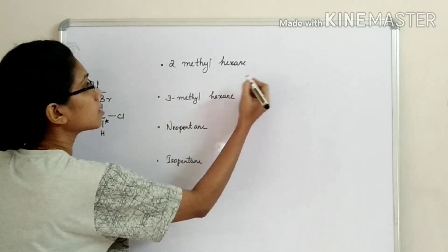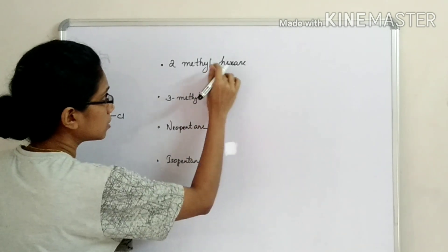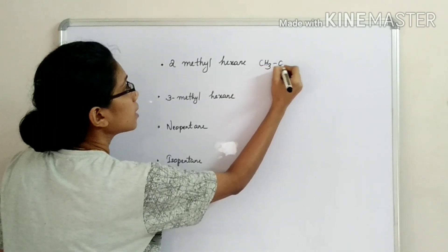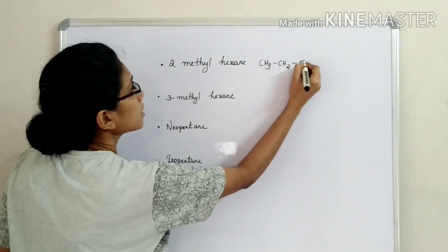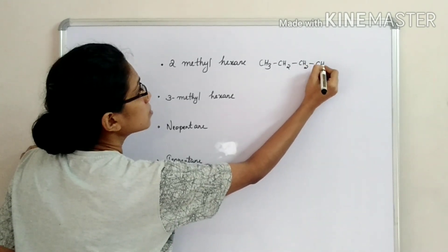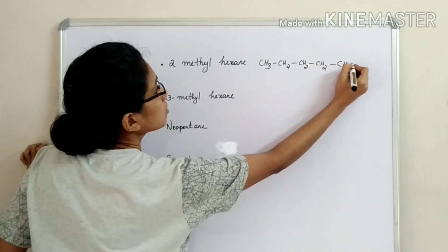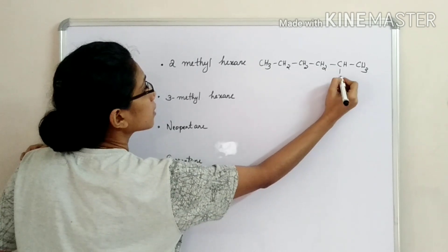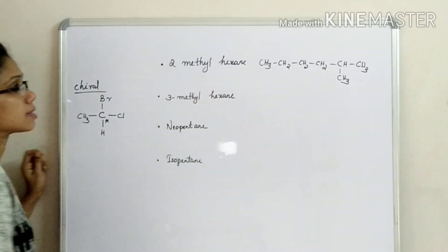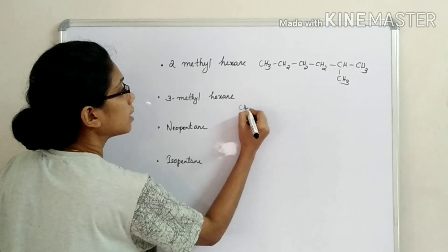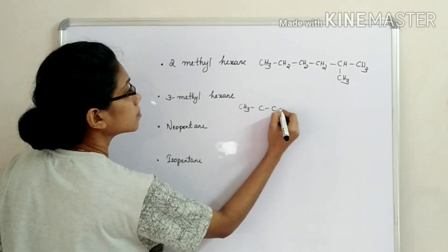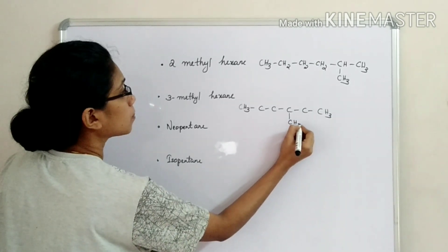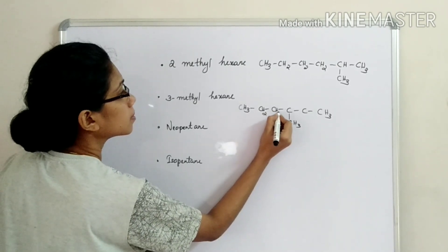Let's talk about the structure. Hexane is: CH3-CH2-CH2-CH2-CH2-CH3, numbered 1 through 6. That gives us 2-methylhexane. The third carbon gives us 3-methylhexane, with the methyl group attached there and a hydrogen on that carbon.